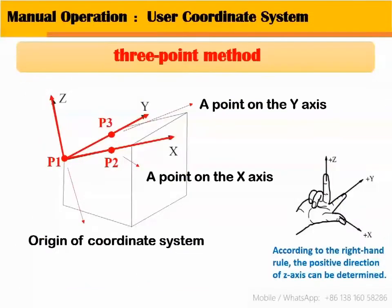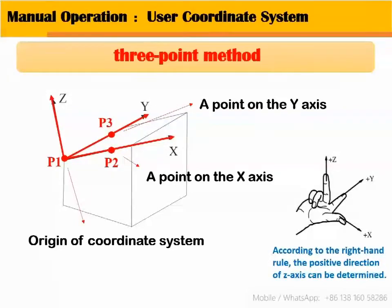The establishment of a user coordinate system generally uses the three-point method. We let the tool TCP reach the origin of the coordinate system, a point on the x-axis, and a point on the y-axis.